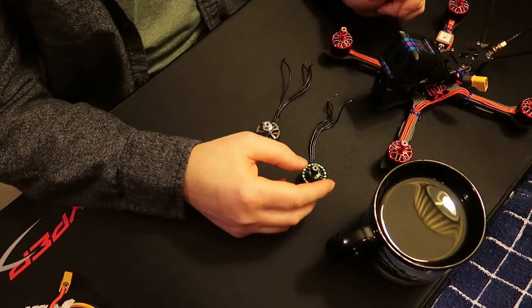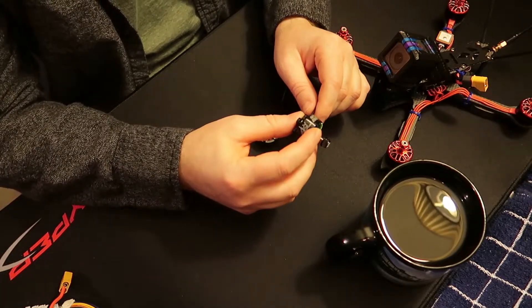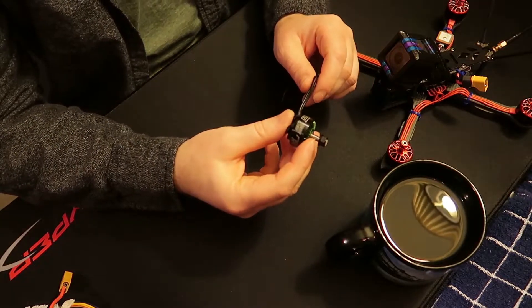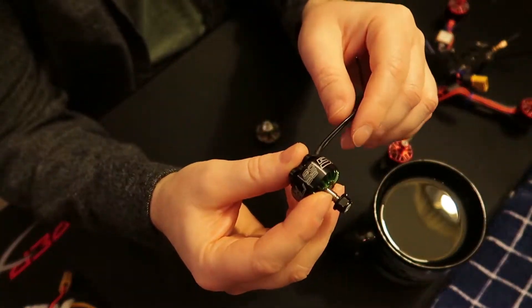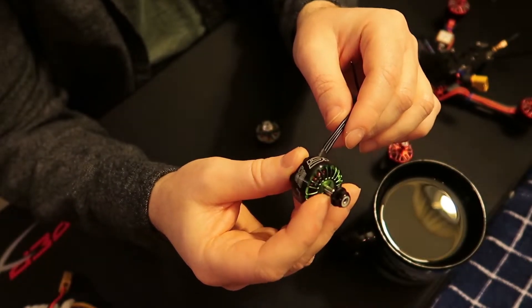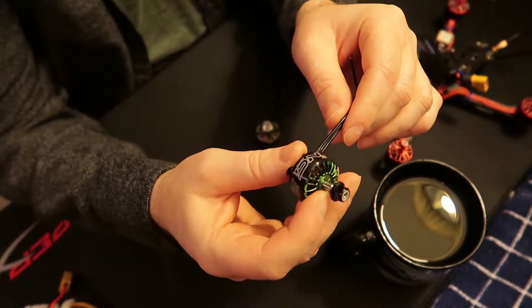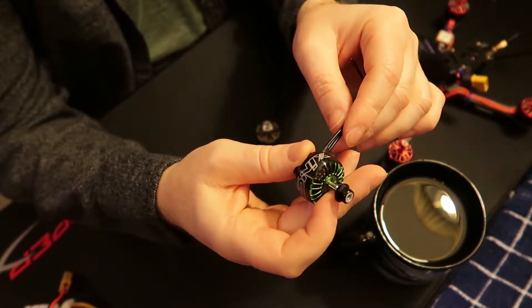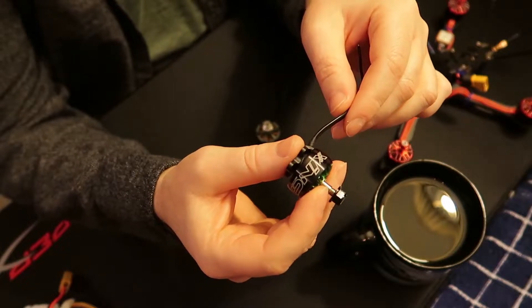The non-E, I'll say one thing about this 2208 1700, this was like the most efficient motor out of the bunch, but it's also the slowest motor. I'll probably put this X-ing on my long range.